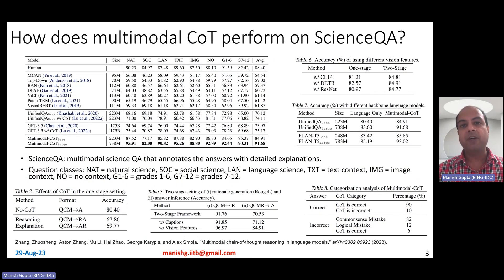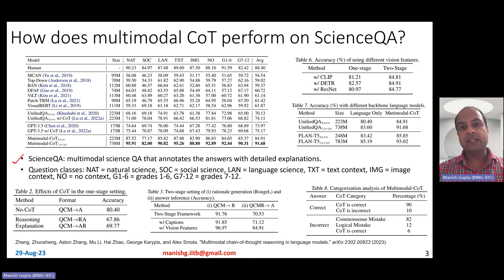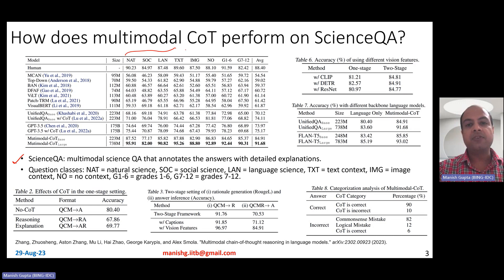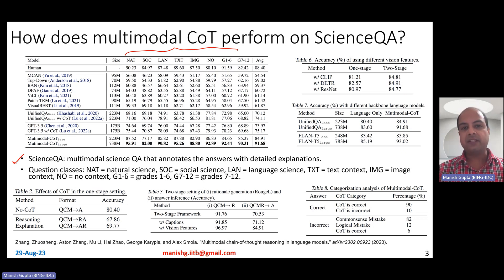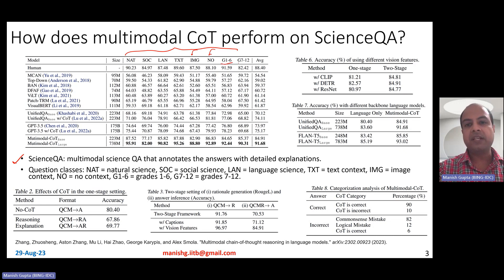How does multimodal CoT perform on the ScienceQA dataset? ScienceQA is a multimodal science question answering dataset that has annotated answers as well as detailed explanations, so the chain of thought is also annotated. It contains several question classes: NAT for natural science, SOC for social science, LAN for language science, TH for text-context-only questions, IMG for image-based questions, NO for no-context questions, and questions catering to different age groups like grades 1–6 or grades 7–12.